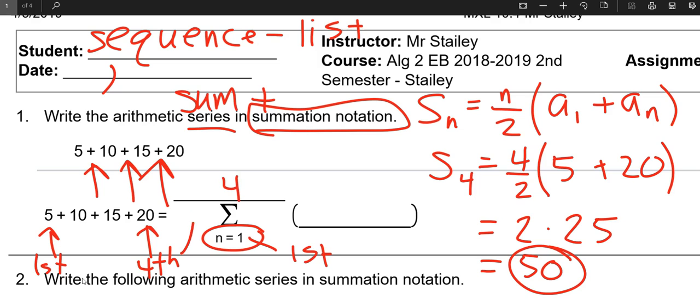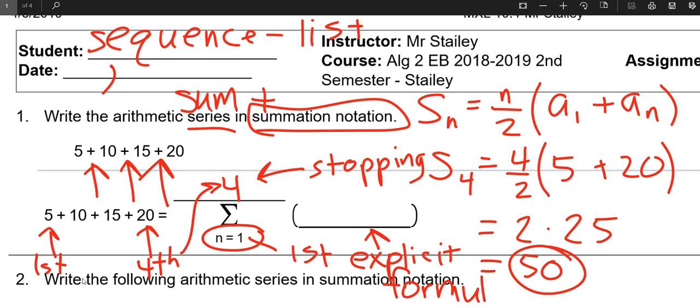We got the first term on the bottom, fourth term on the top. That tells me my starting place and my stopping place, how many terms we have. Then of course, we've got the explicit formula which goes in the parentheses. We know the first term is five, and we know the common difference is five. What I'm about to write in the blue inside those parentheses is exactly what I would expect on a test.